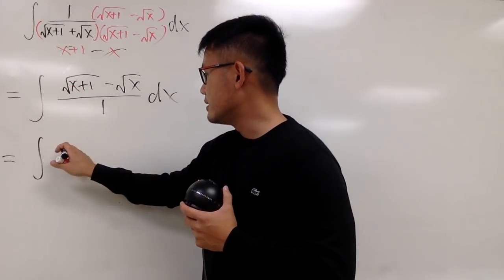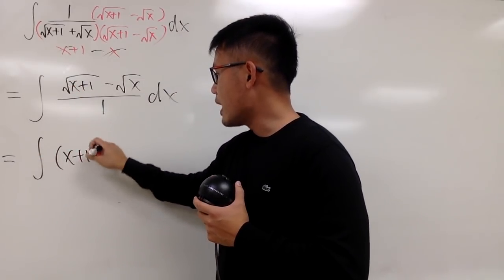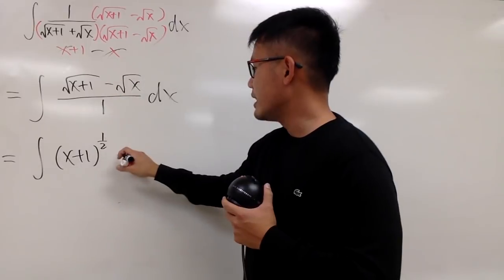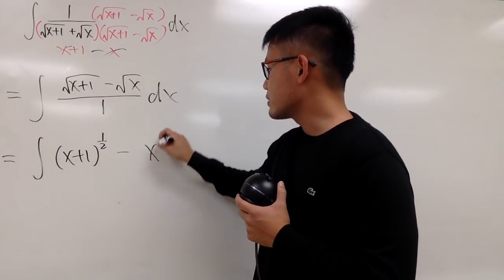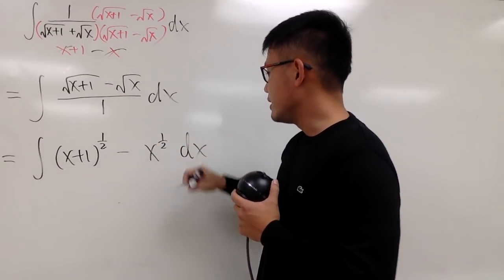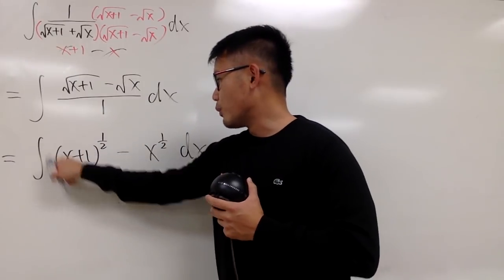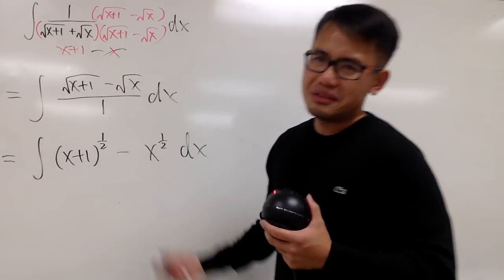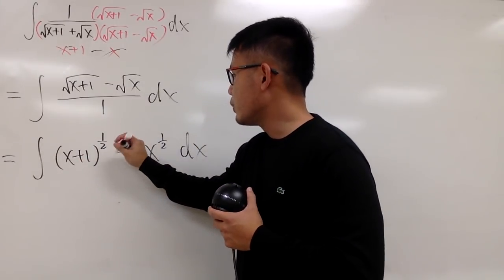This is the integral, and this is like saying, x plus 1 raised to the 1 half power, and then minus, this is of course x to the 1 half power, and dx. And some people might want you to put on a big parenthesis like this. It doesn't really matter, in my opinion. But anyway, we'll finish this.